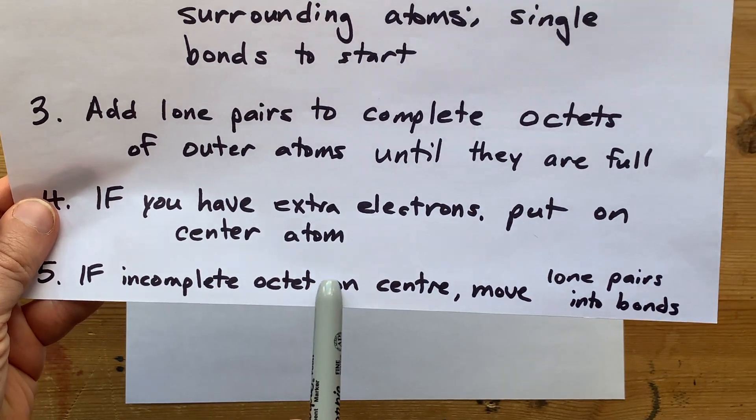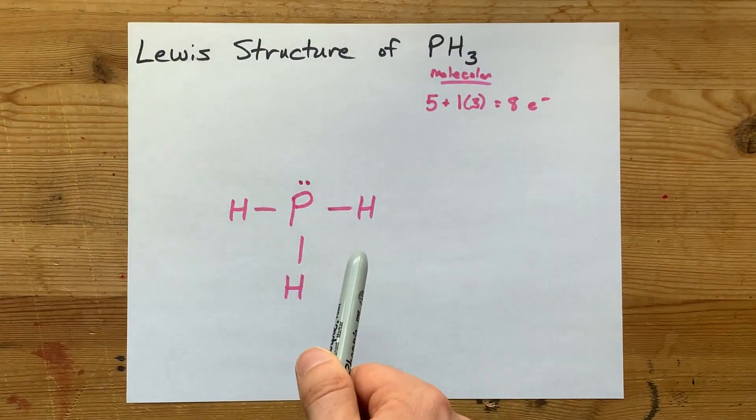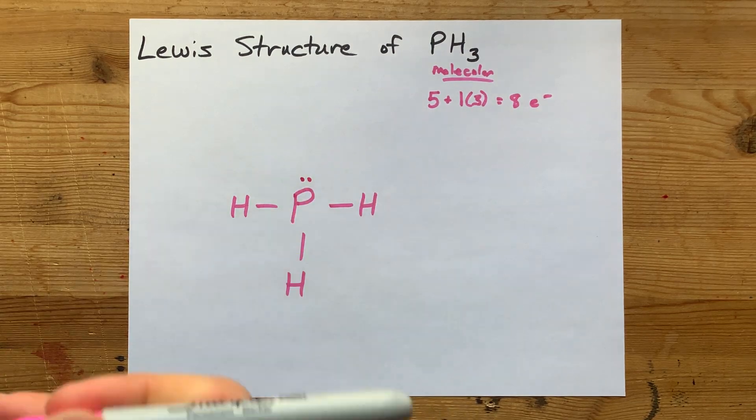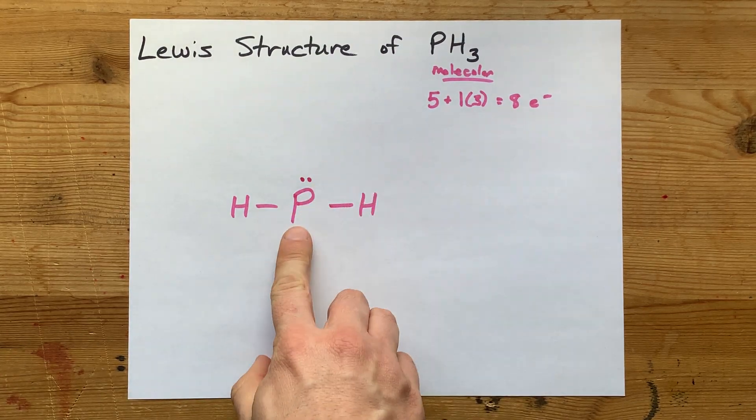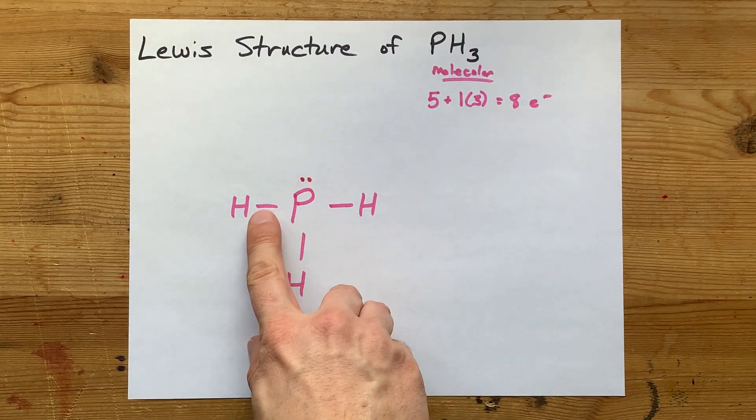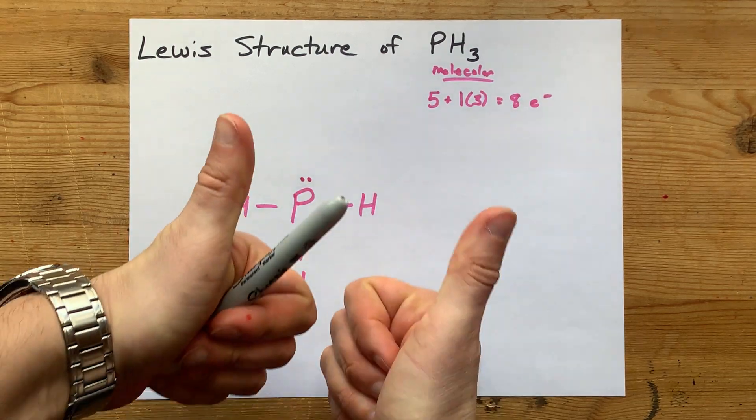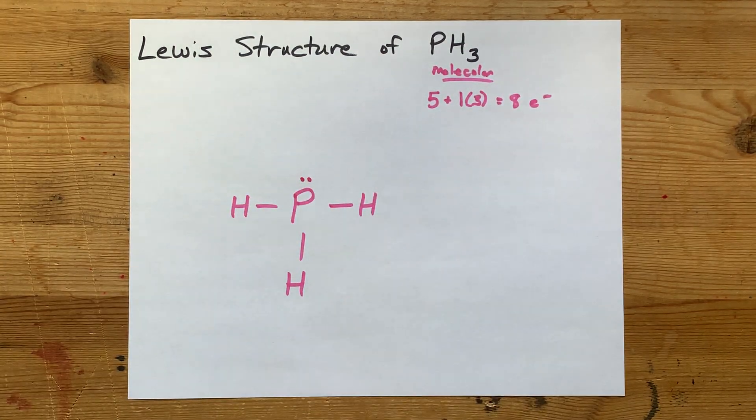If you have an incomplete octet on the central atom, we're going to move lone pairs from the outer atoms into the bonds. Now, first of all, this phosphorus already has 2, 4, 6, 8 electrons around it. That's a complete octet.